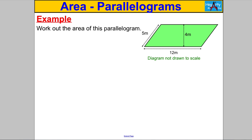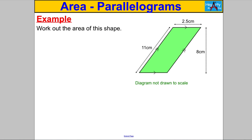Let's work out the area of a few parallelograms. Here's the first one — pause the video and have a go. We identify the base length, which is 12, and the perpendicular height, which is 4. We ignore the 5, which is the slanted side. So the area is simply 12 × 4 = 48 meters squared.